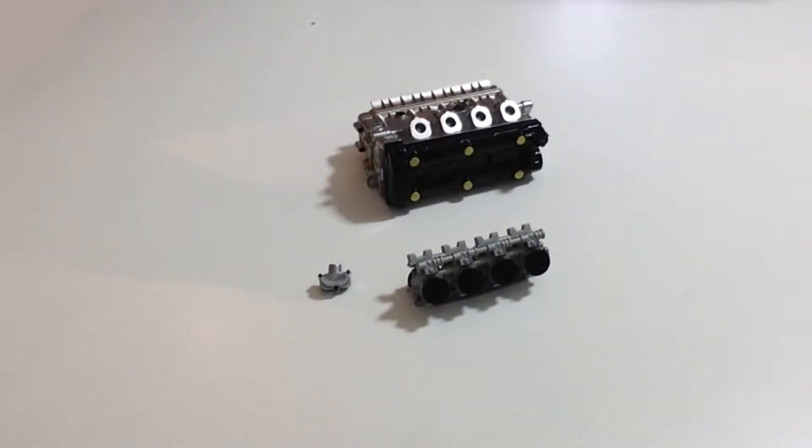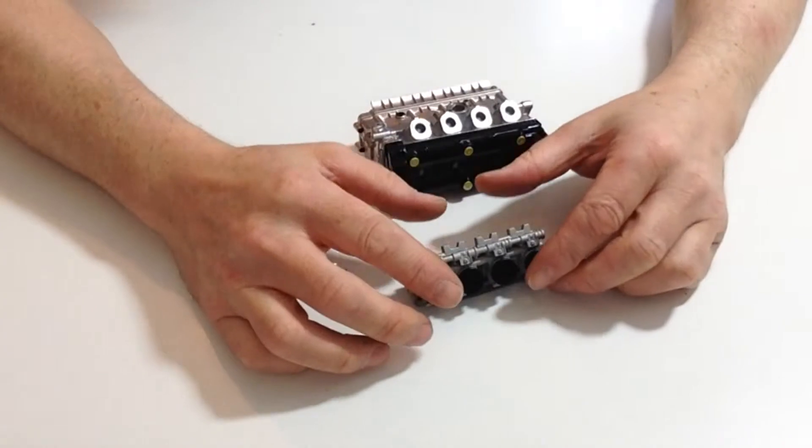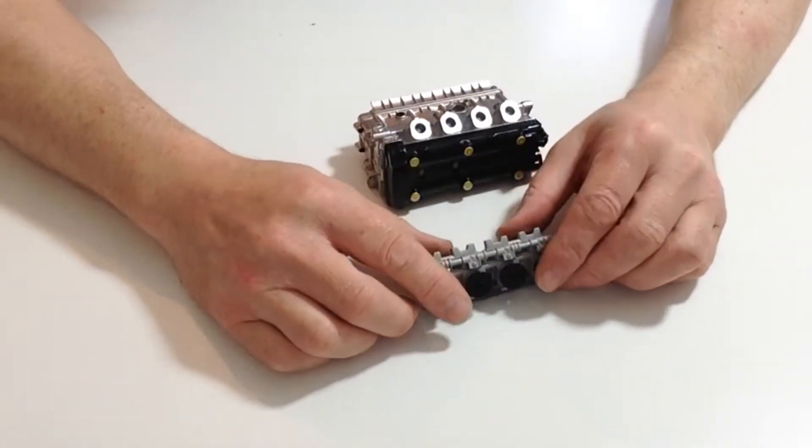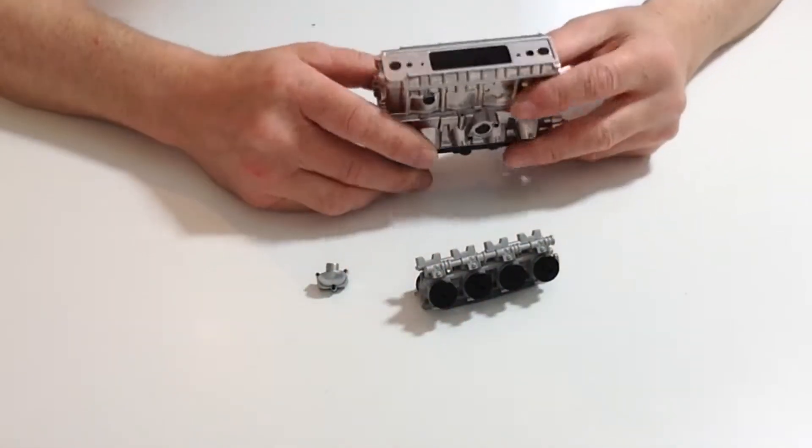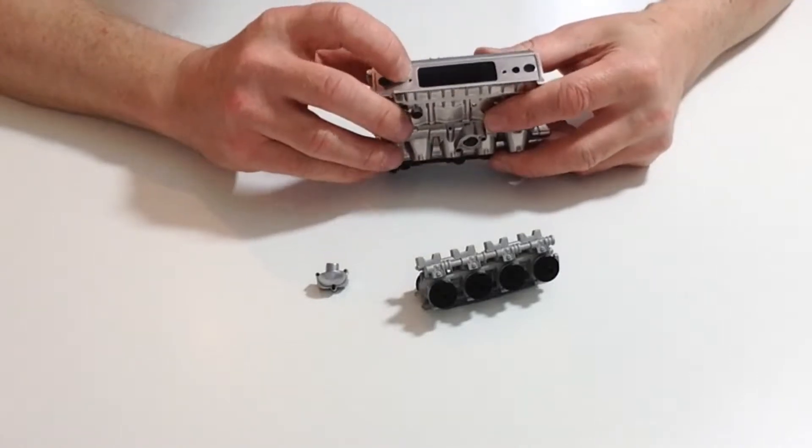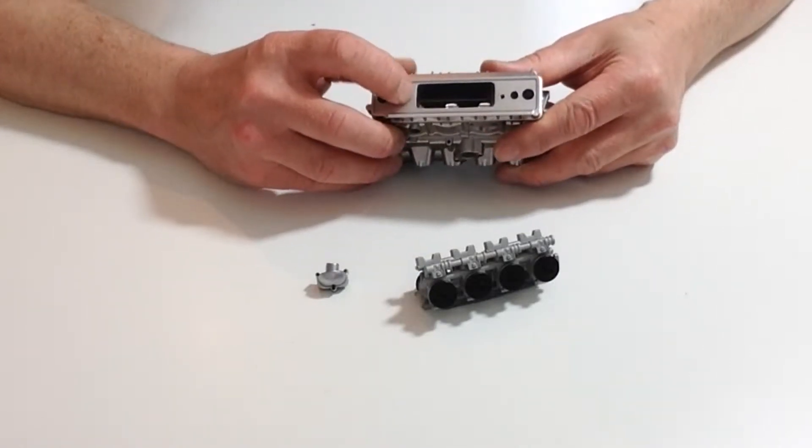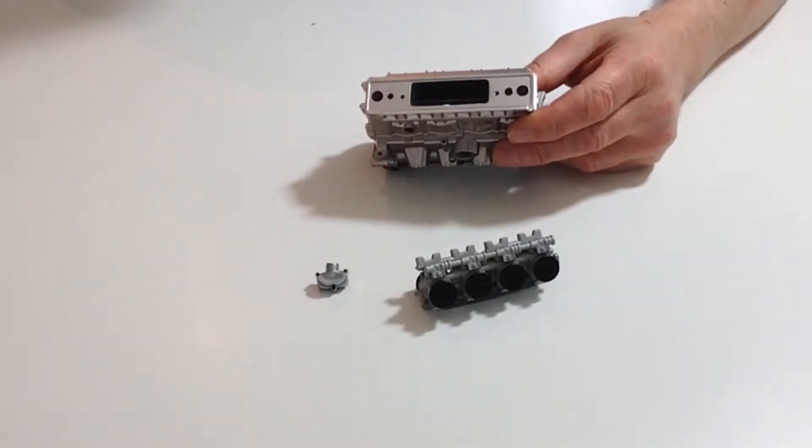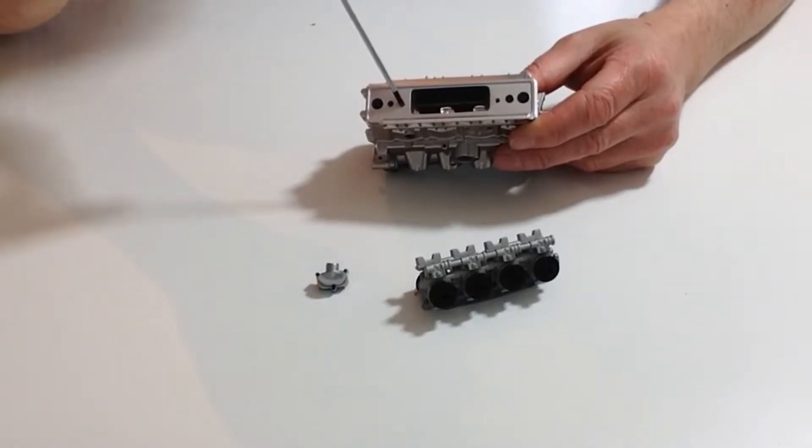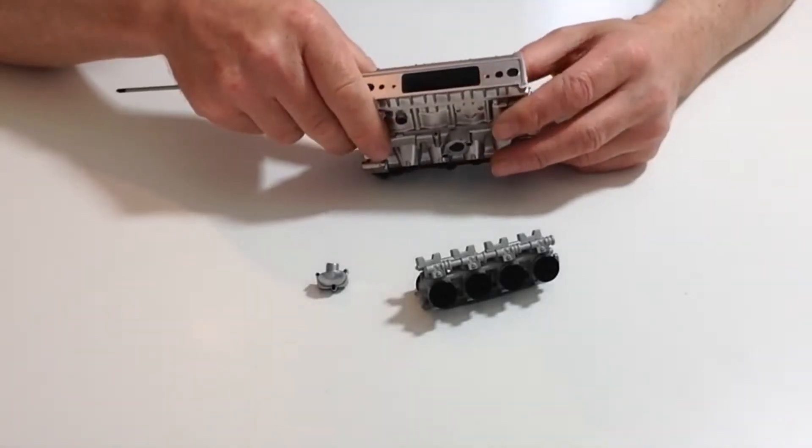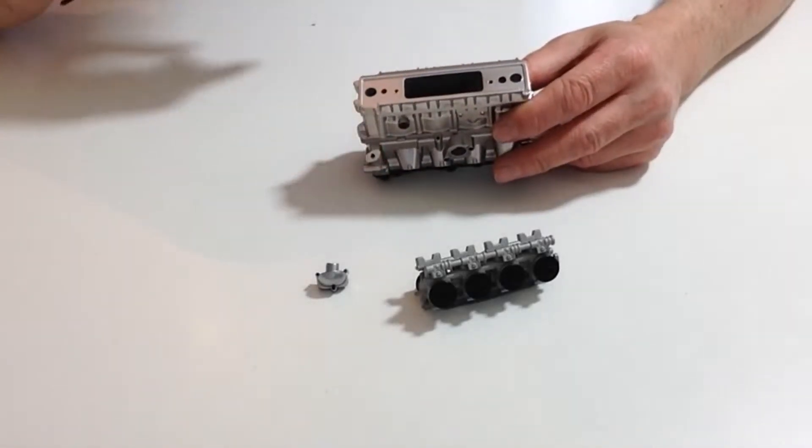Take the cylinder block which was assembled in stage 20 and remove the throttle body from it. If you have not already done so, tap a 2.3mm thread in the two small holes on the underside of the cylinder block using a tap or a spare 2.3mm screw.